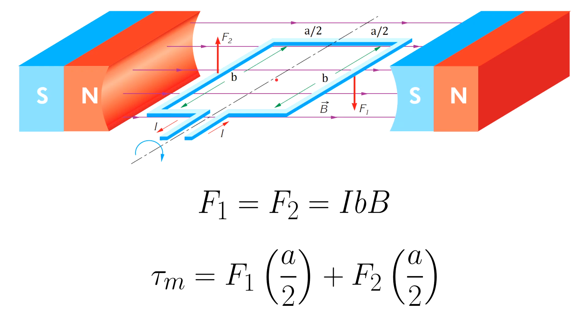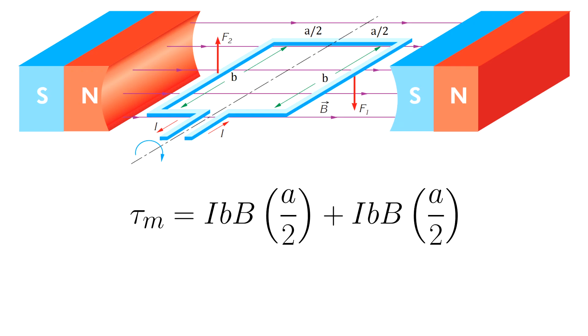The torque is given by F1 multiplied by a over 2. Why a over 2? Because the distance between the force and the axis of rotation is half of the width—it's a over 2. By substituting the value for the force into the equation, we get this. Further calculations will lead to this equation.